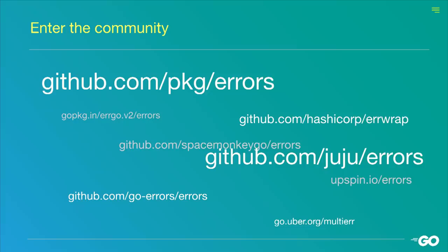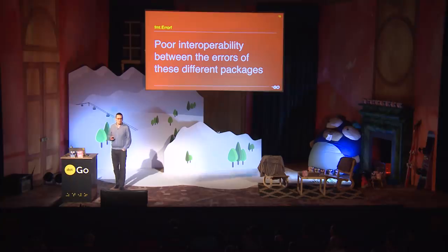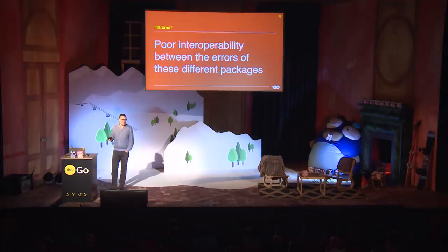I'm not the first one to notice this — many other people have noticed this problem before. There are actually many solutions provided by the community to solve this problem. Not all error packages address the same issues discussed here, but a vast majority address at least some subset of them. Problem solved, right? Well, there is a problem that remains. Even though these packages might work by themselves, the different error values produced by these packages don't interoperate very well.